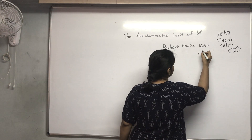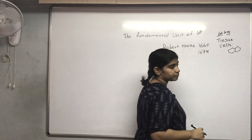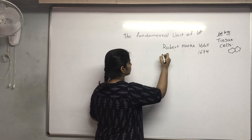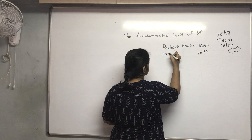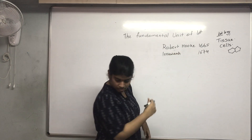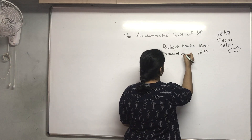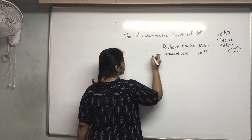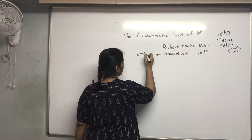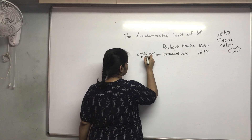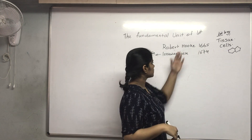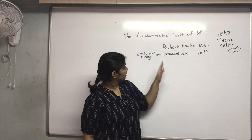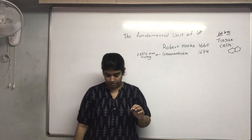The second scientist who discovered cells was Leeuwenhoek, who made his discovery in the year 1674. Leeuwenhoek's discovery noted that the cells are living. So Robert Hooke in 1665 discovered dead cells, while Leeuwenhoek in 1674 discovered living cells.